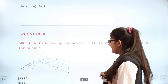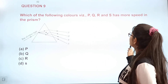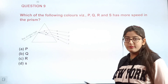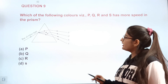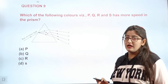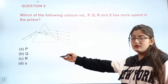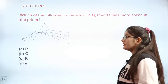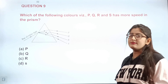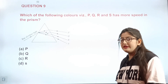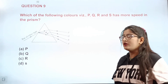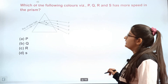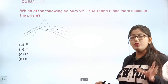Question 9: A prism dispersion diagram shows colors labeled P, Q, R, S. Which color has the most speed in the prism? The correct answer is A — P, because red is marked as P, and red light travels fastest through a prism. As a bonus, comment below which color P, Q, R, S has the slowest speed.